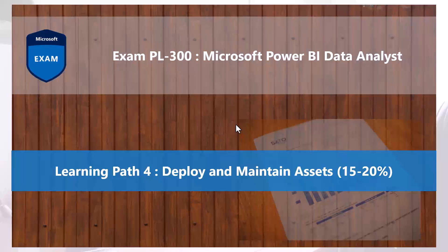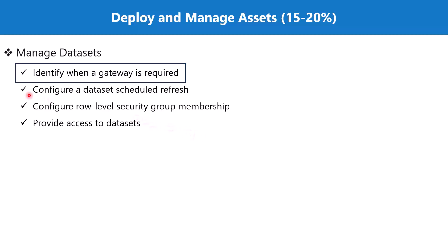Bismillahirrahmanirrahim. Hello everyone, welcome back to the PL300 exam preparation series where we are exploring the fourth learning path: deploy and maintain assets. In this video we are going to look at the topic 'identify when a data gateway is required,' which is part of the section 'manage data sets.' First let's look at the concept of a data gateway, and then we'll explore the situations where it is required.